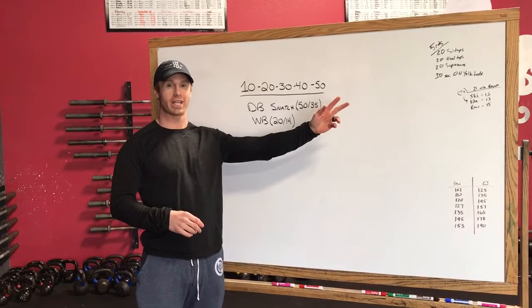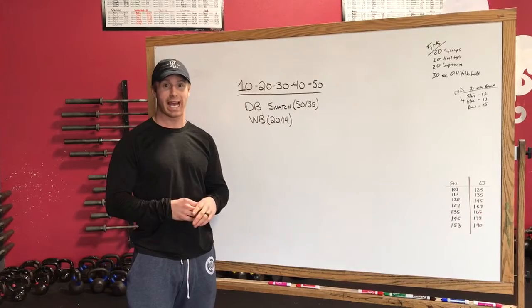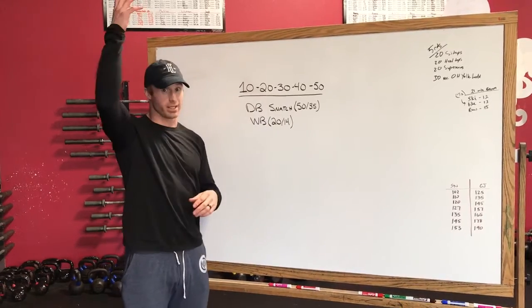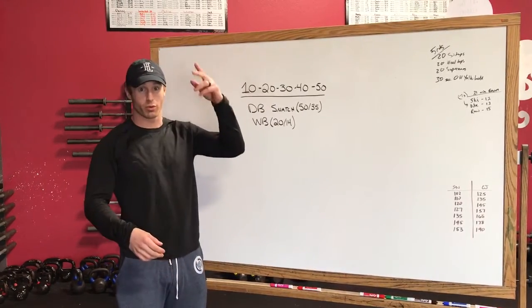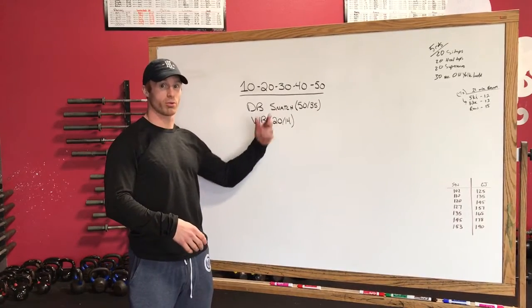Yes, I am tricking you to do Karen, but a crappier version of it. So you'll do alternating dumbbell snatches, one-two and so on and so forth. Ten dumbbell snatches, ten wall balls, twenty-twenty, thirty-thirty, forty-forty, fifty-fifty.